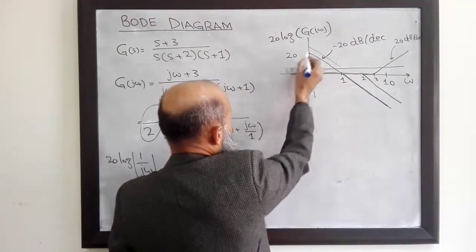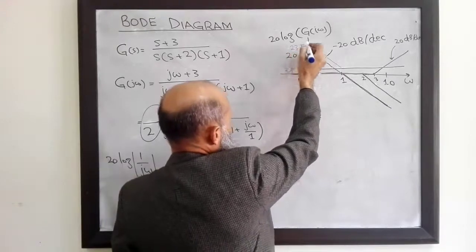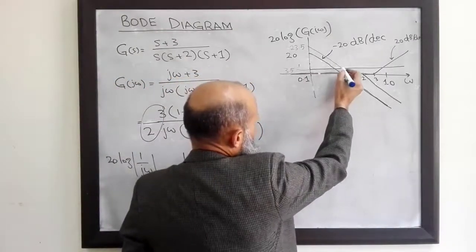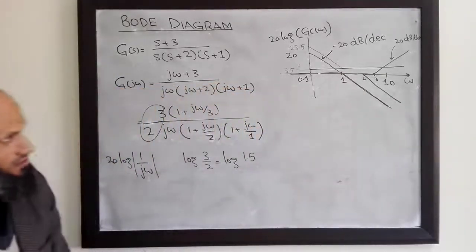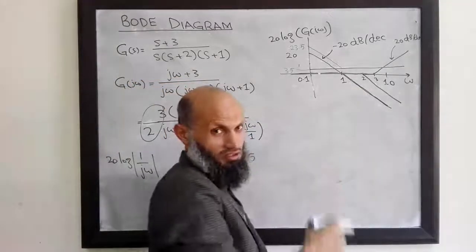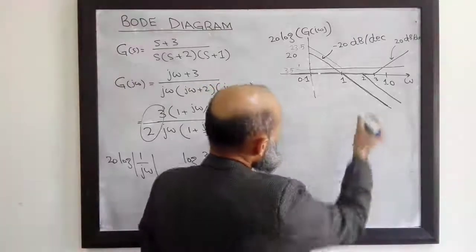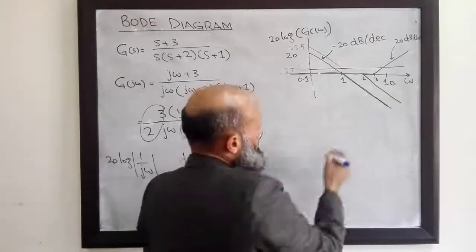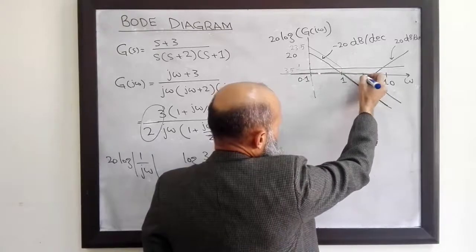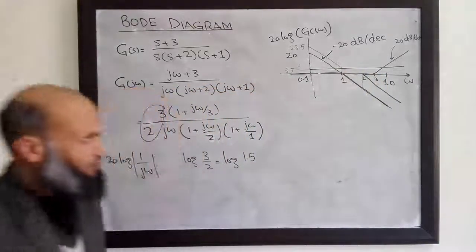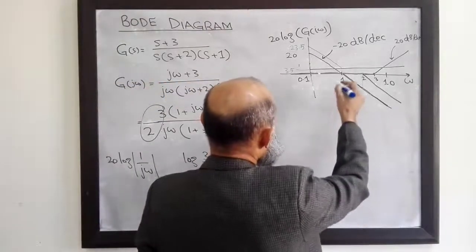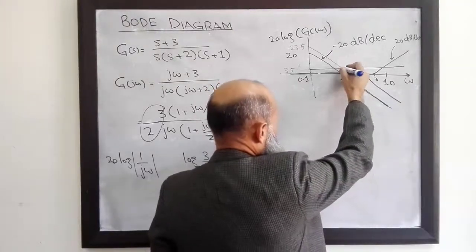After the first corner frequency, there are two terms each with a slope of minus 20 dB per decade, giving a combined slope of minus 40 dB per decade. So from this frequency up to the next corner frequency, we draw a line with a slope of minus 40 dB per decade. On the graph paper, you can first draw reference lines with slopes of minus 20 dB per decade and minus 40 dB per decade to guide your sketching.